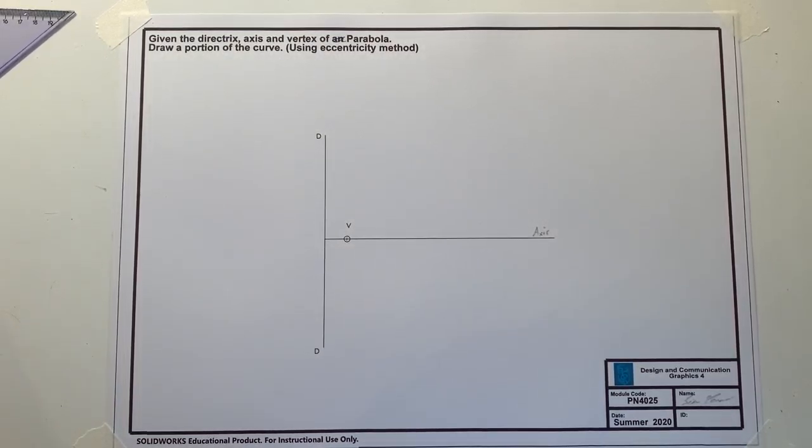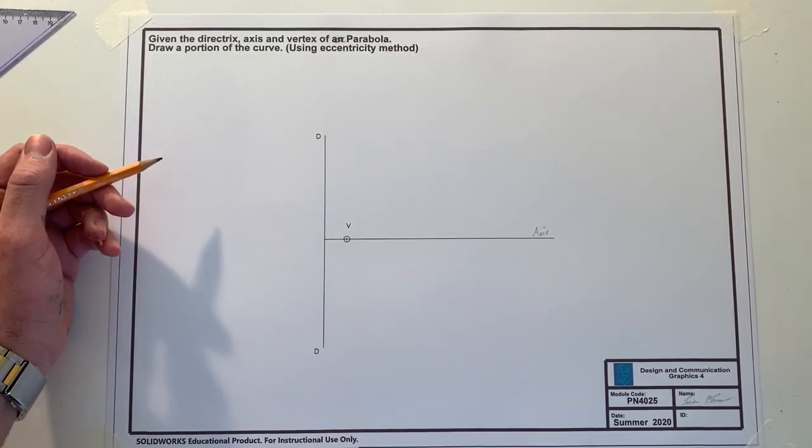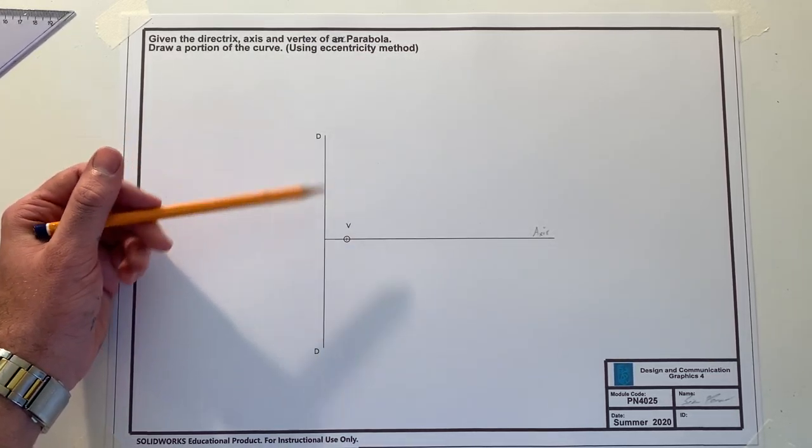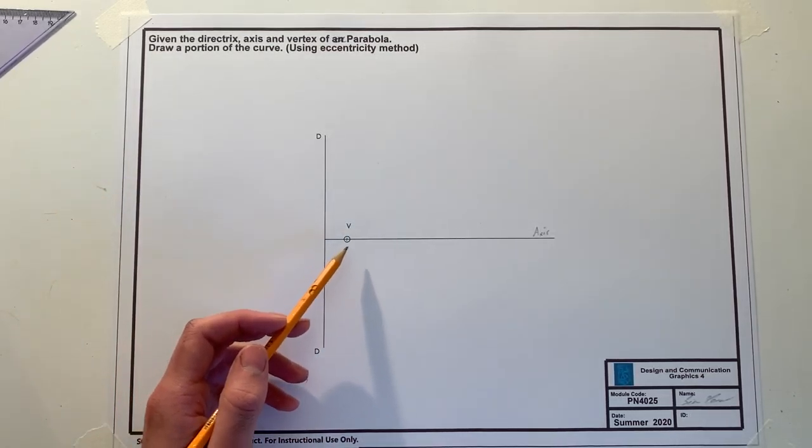Okay, so during this video we're going to be traveling through our first example for this week's lab, and what we're going to be doing is constructing a parabola. As you can see here, what we've been given is our directrix which is labeled DD, this line, our axis which is traveling perpendicular to our directrix here, and it's traveling through our vertex which is marked V.